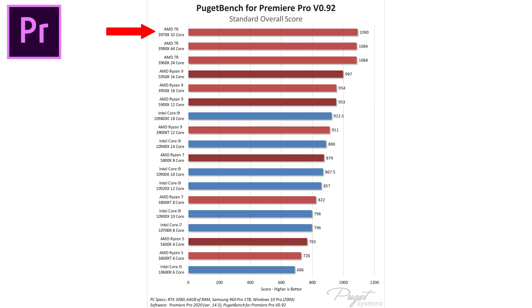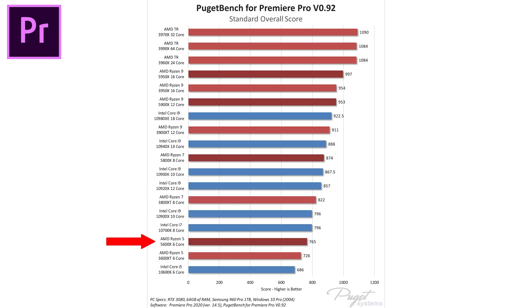Going a bit lower to the 8-core 5800X, at that point the 10900K is only about 1% slower than AMD. Because of the QuickSync feature, Intel still provides better playback speed and lets you dedicate the GPU to other effects. But even at the low end, the 5600X six-core AMD processor outperforms the Intel 10600K, giving better performance at a similar or lower price.